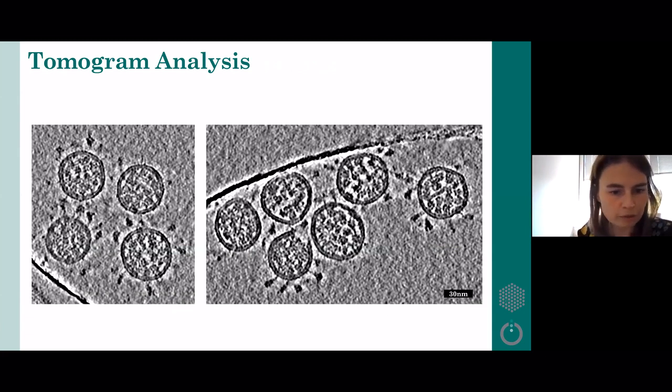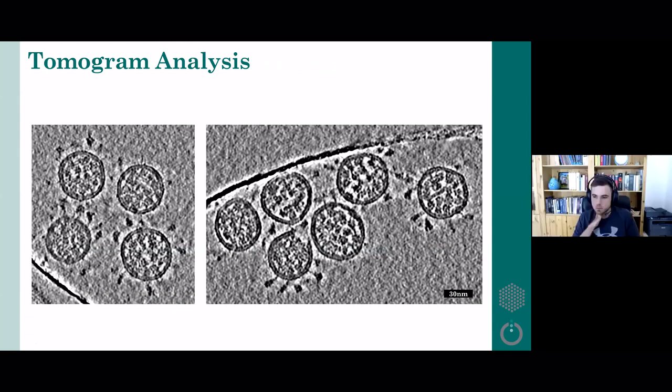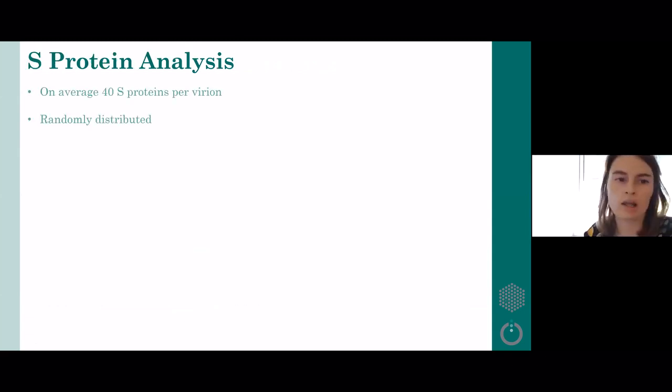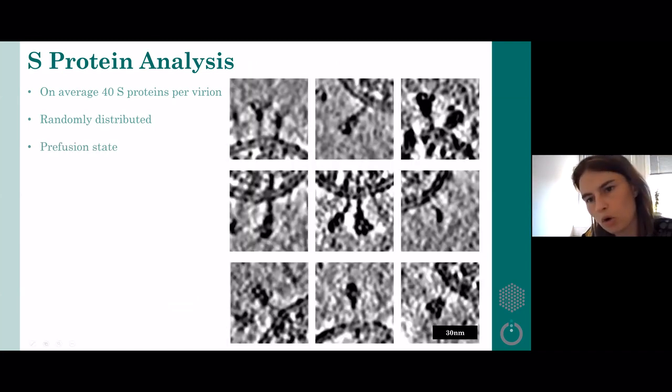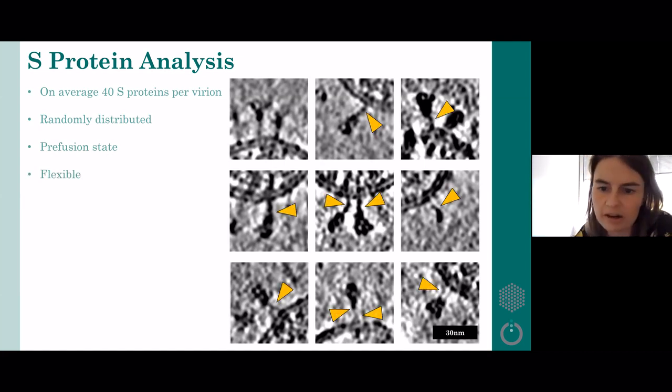We started with spike analysis as this was the most urgent. We found that on average there are like 40 S proteins or spikes per virion and they are randomly distributed. They do not tend to cluster. If you look more closely, it was known from other techniques that they can exist in pre-fusion and post-fusion state, and this large globular domain suggests most of our spikes are in pre-fusion state. The most striking thing we learned was that they are flexible. Usually people assume them to be straight as needles sticking out from the virus, but we can see all kind of bending. That was really surprising.